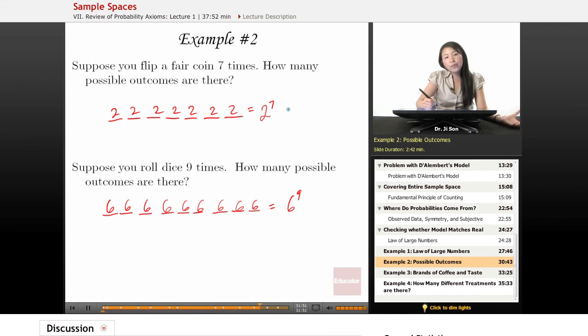And so the other way that you'll see the fundamental rule of counting is that it'll usually say if you have n events.